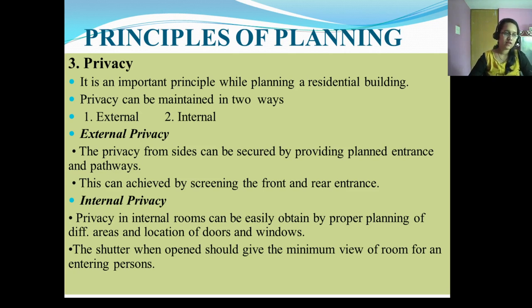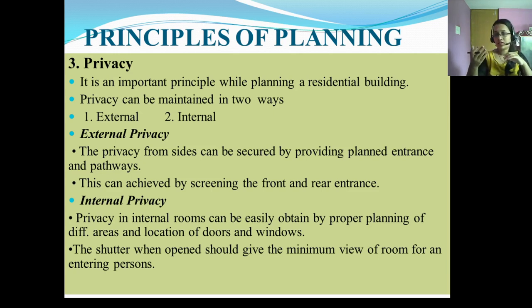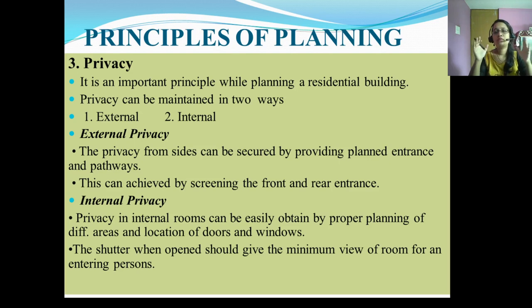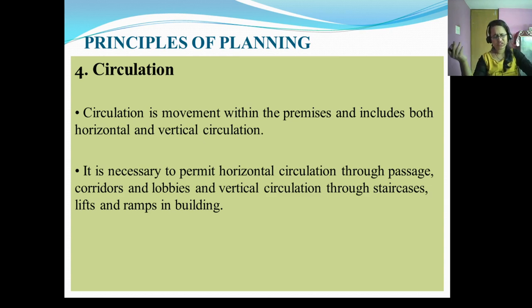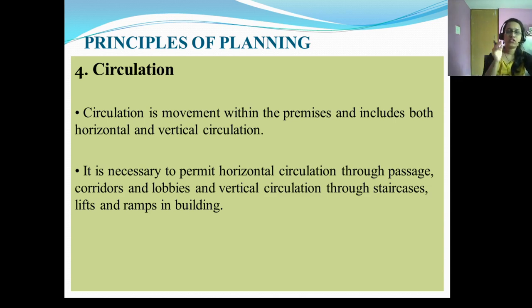Privacy is an important principle in planning a residential building. There are two kinds: external privacy and internal privacy. External privacy can be secured by providing planned entrance and paths and screening front and rear entrances. Internal privacy is obtained by proper planning of different areas and location of doors and windows, where shutters when open should give minimum view of the room. Circulation refers to movement within the premises — horizontal circulation provides access to rooms on the same floor via passages, corridors, halls and lobbies; vertical circulation provides access to rooms on different floors via staircases and electrical lifts.